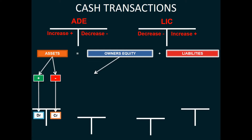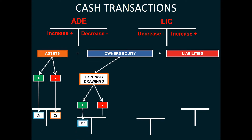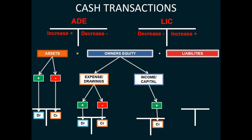On our owner's equity side, if we have expenses or drawings, if that increases, we would record it on the debit side. And if that decreases, we will record it on the credit side. The second leg of our owner's equity will be our income or capital. Now if our income or capital increases, then we would record this on the credit side. And if it decreases, then we will record it on the debit side.